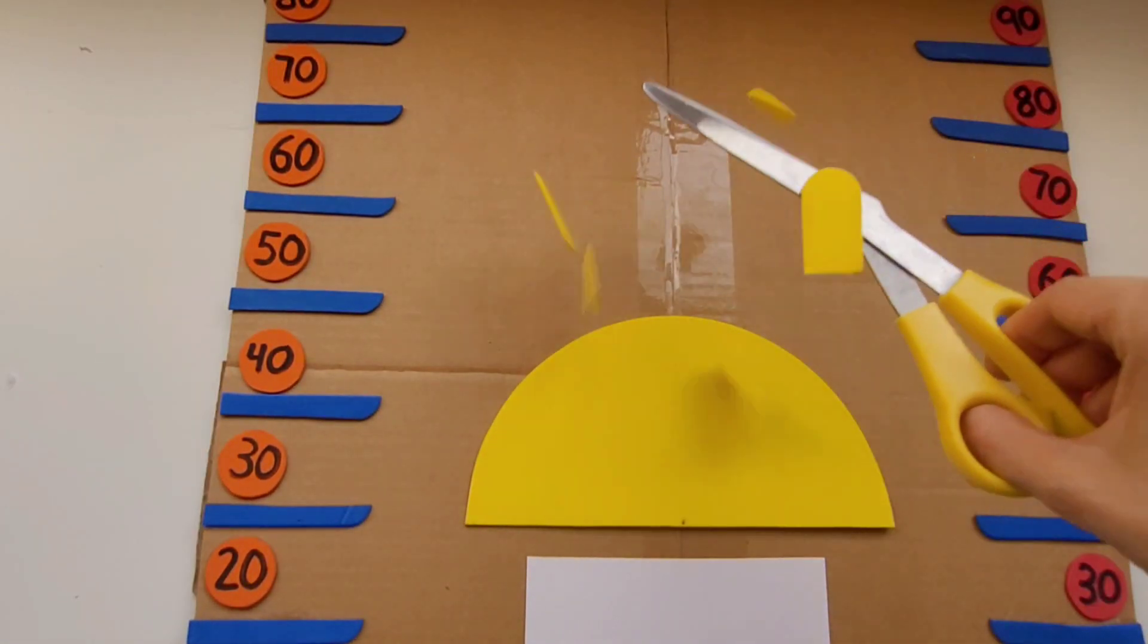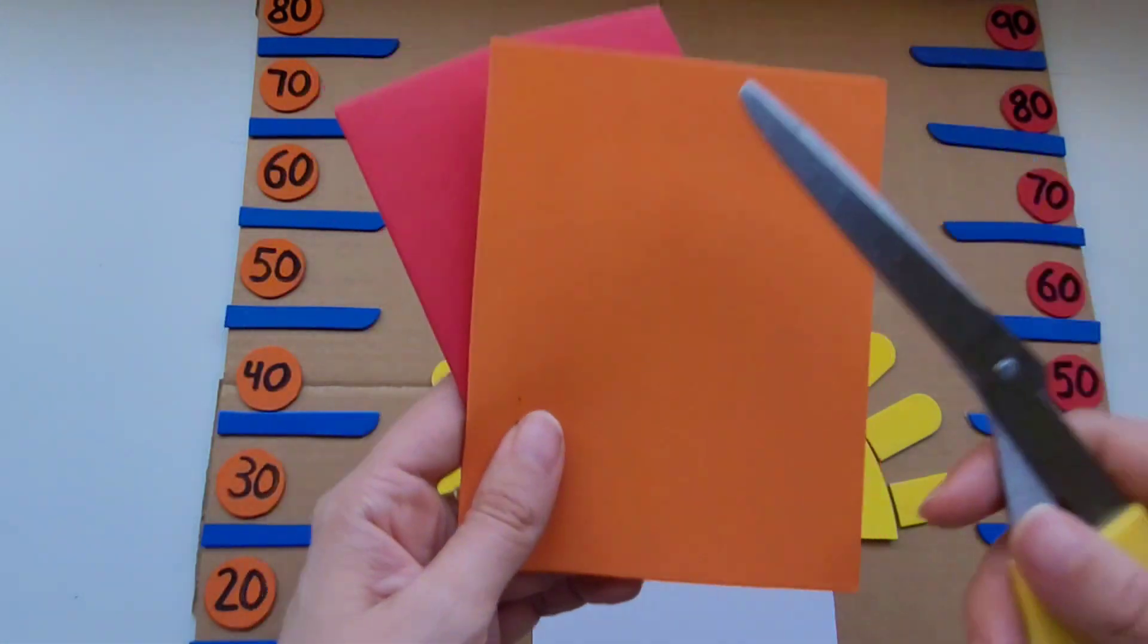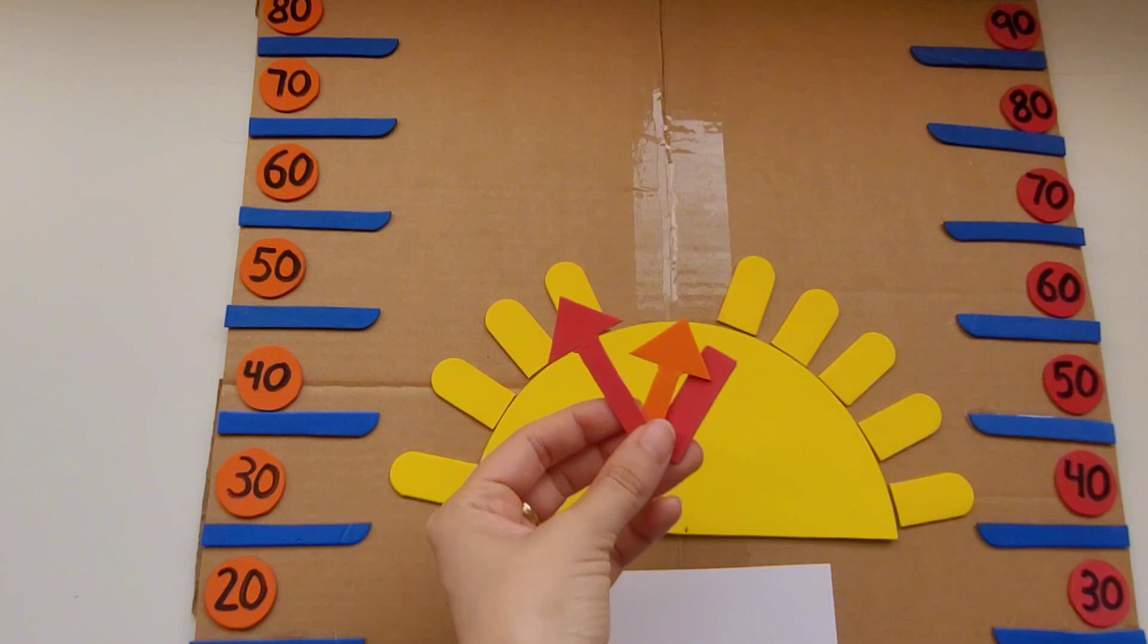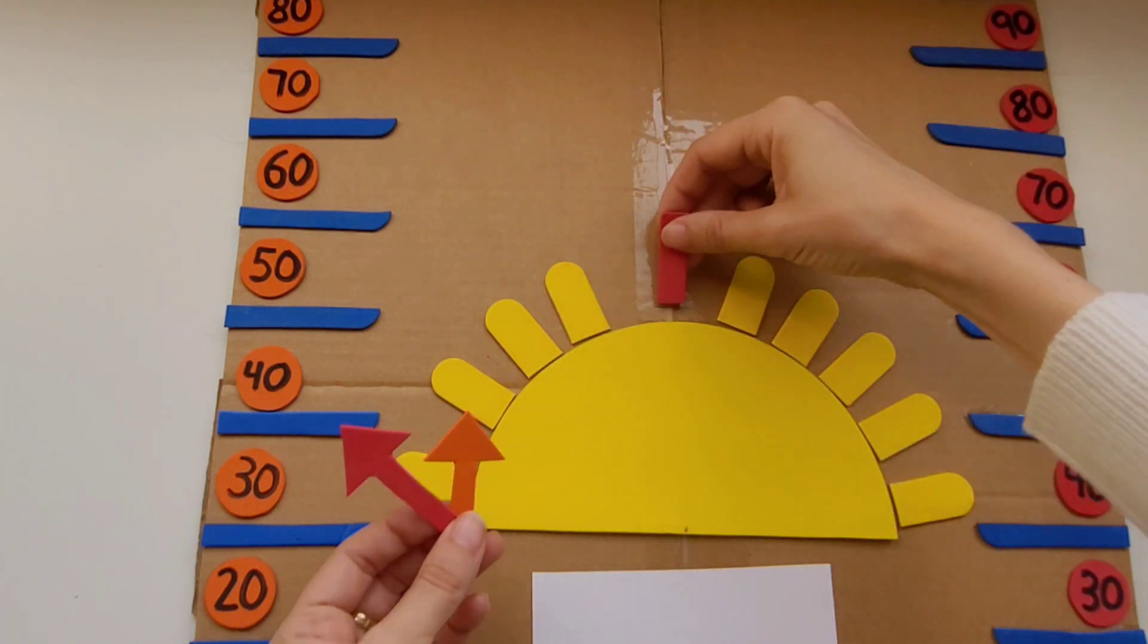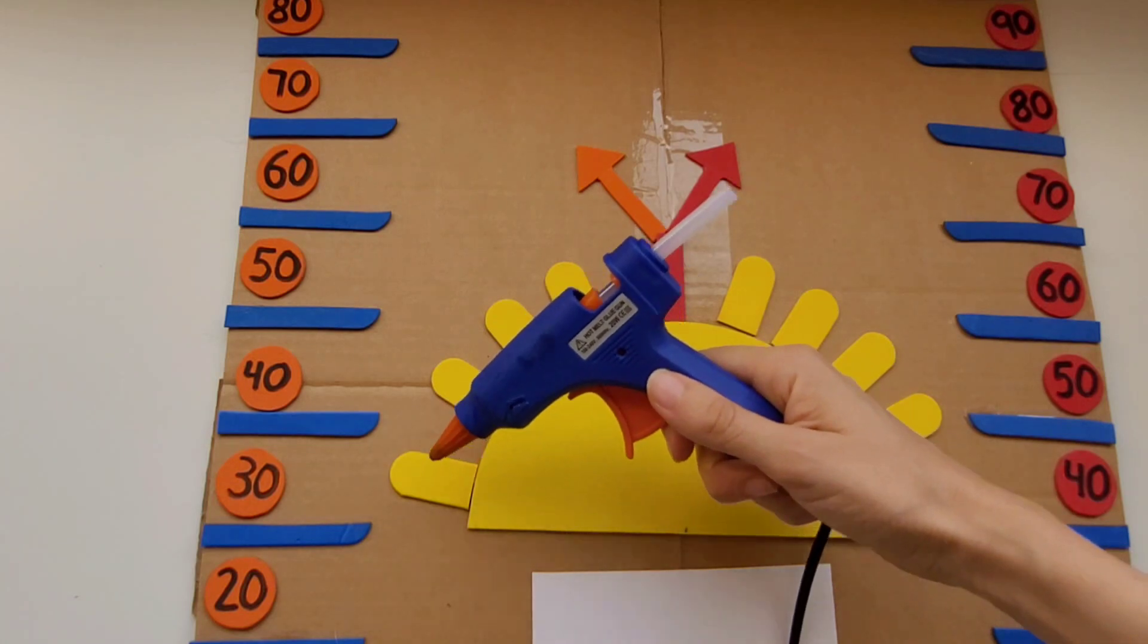Next I'm going to cut out nine foam pieces that are going to be the sun rays. Next I'm going to cut out two arrows, an orange arrow and a red arrow. I'm going to have them facing the tens that are the same color.